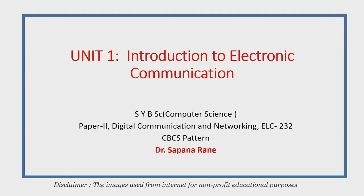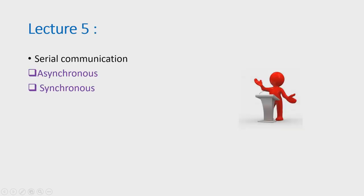Hello students, this is the first lecture of unit number 1 of paper number 2, Digital Communication and Networking. In this lecture, we are going to study Serial Communication Systems and two types of Serial Communication Systems: Asynchronous Serial Communication and Synchronous Serial Communication. Finally, we will compare Asynchronous Communication and Synchronous Communication based on its performance parameters.